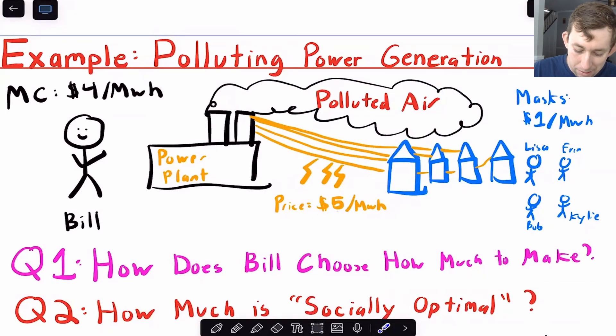And now the people can buy masks in order to kind of defend themselves against the polluted air. And let's say that masks are about a dollar per that same unit. So first, I want us to think about two things. The first is how does Bill choose how much electricity to generate?